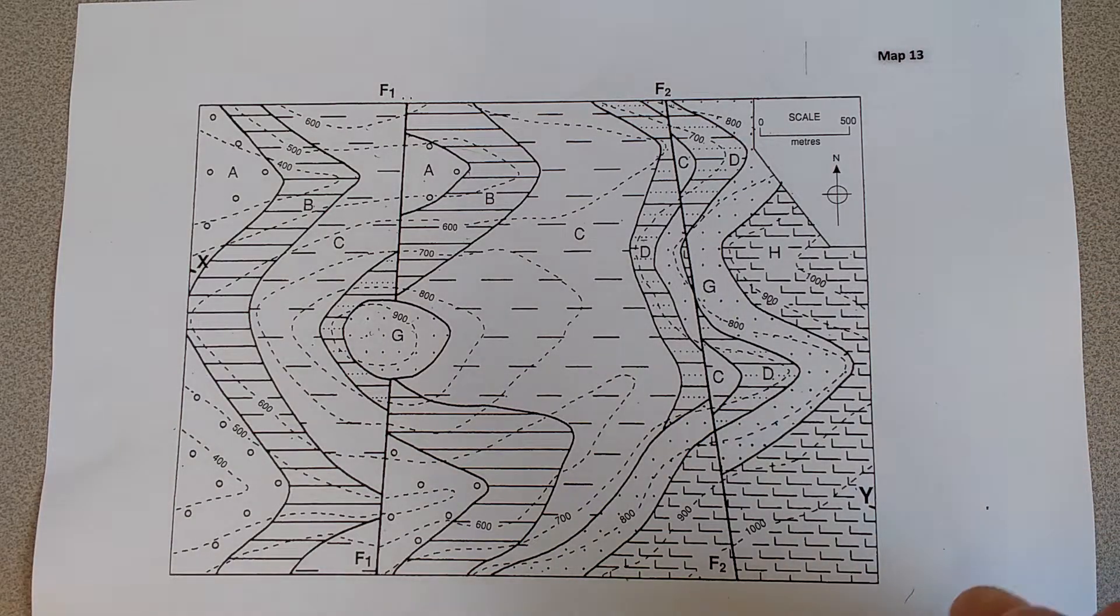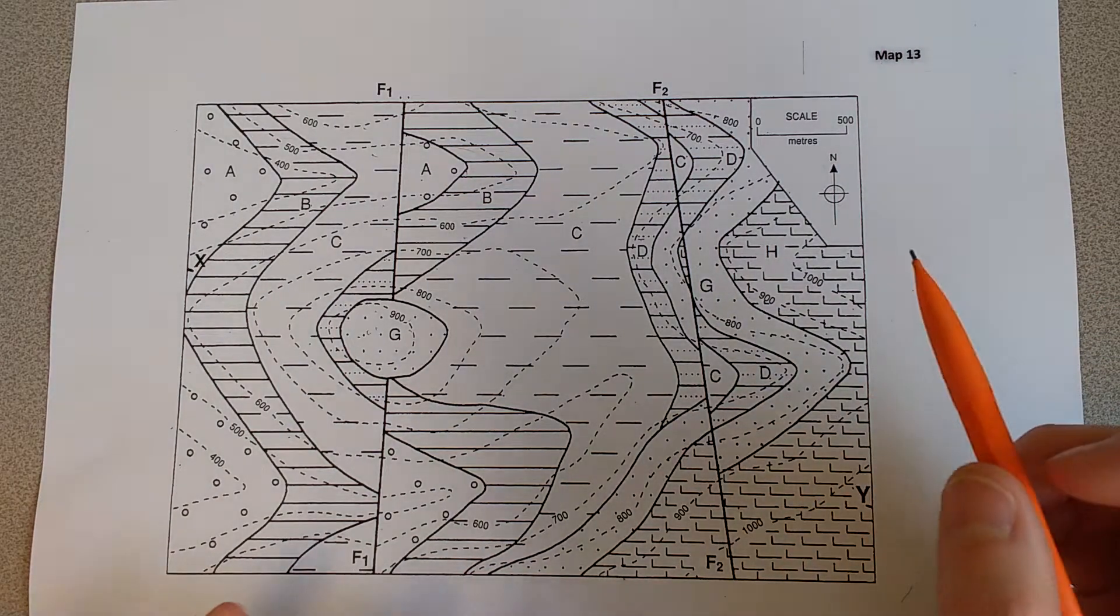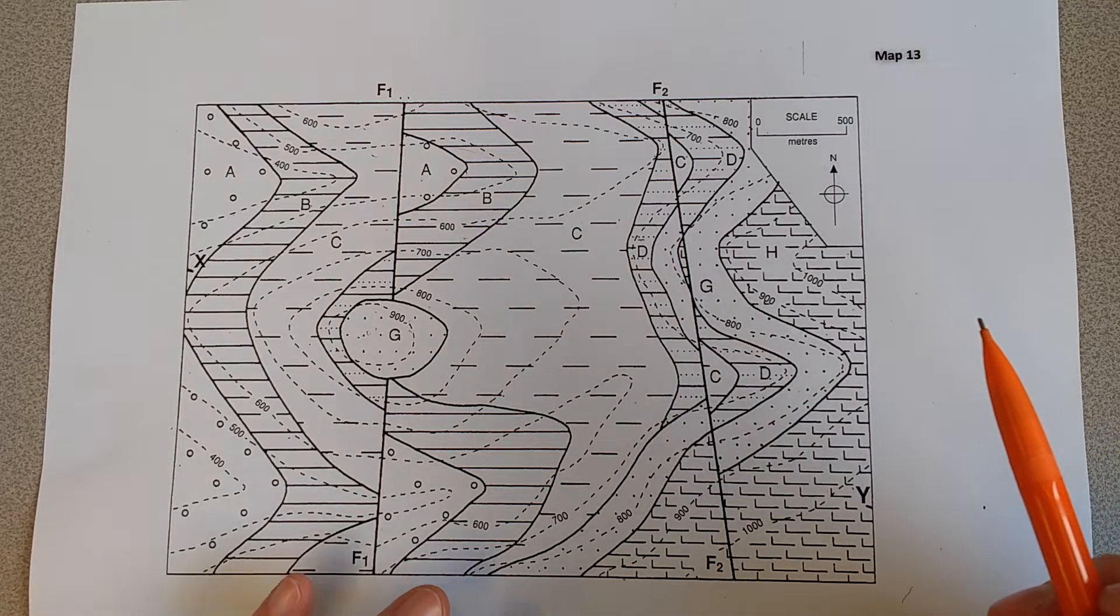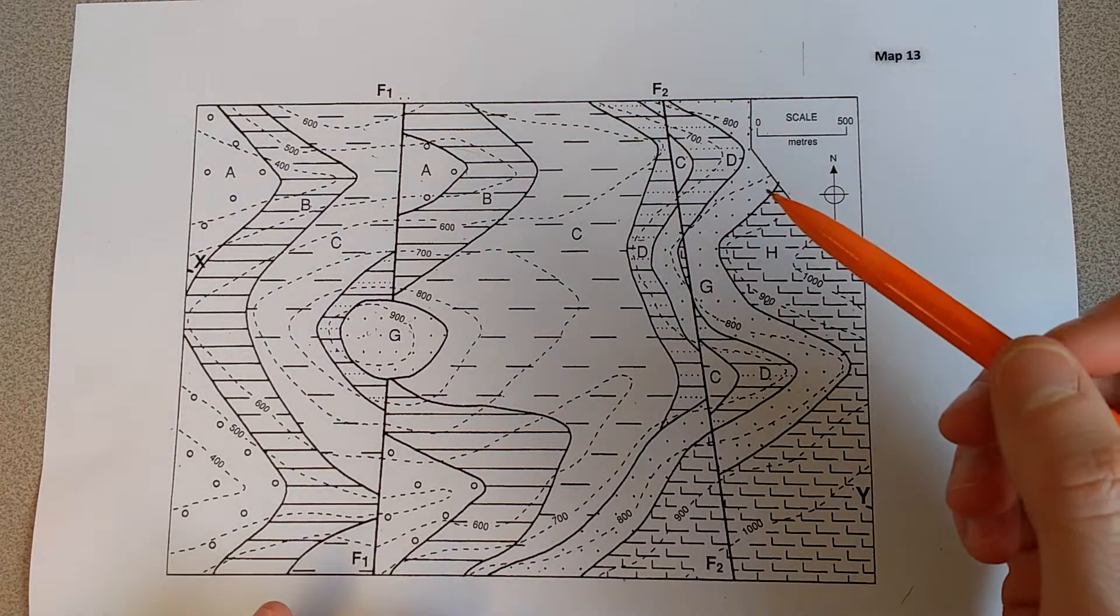So the way that we identify this is by finding certain units that are truncated or cross-cut each other.